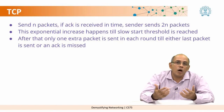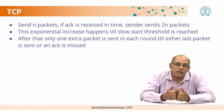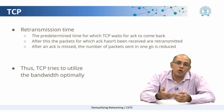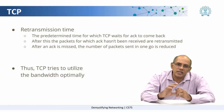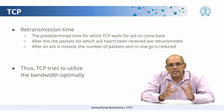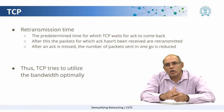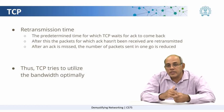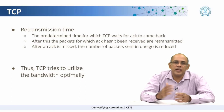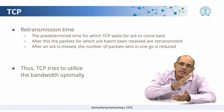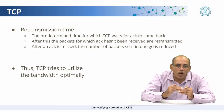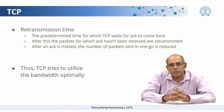How does TCP know how much time to wait for the acknowledgement? That is a concept called the retransmission timeout. We can think of it as a predetermined time that TCP waits for the acknowledgement to come back. If the acknowledgement does not come back in time, it drops the values and starts again from a smaller number of packets to be sent.